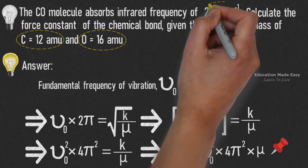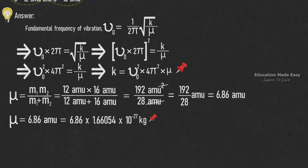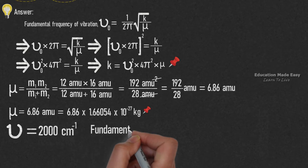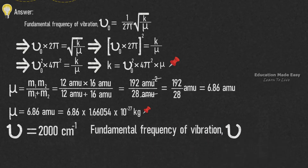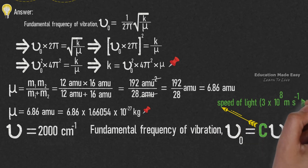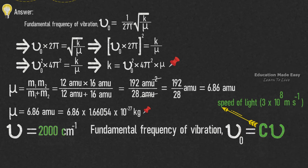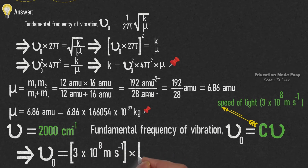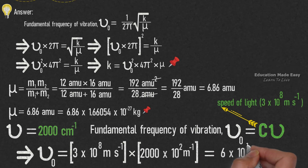The absorbed frequency is 2000 cm⁻¹. The fundamental frequency of vibration is given by μ₀ = c × ν̃, where c = 3 × 10⁸ m/s and ν̃ = 2000 cm⁻¹ = 2000 × 10² m⁻¹. Therefore, μ₀ = 3 × 10⁸ × 2000 × 10² = 6 × 10¹³ s⁻¹. Let us pin this value.